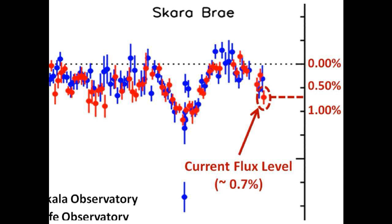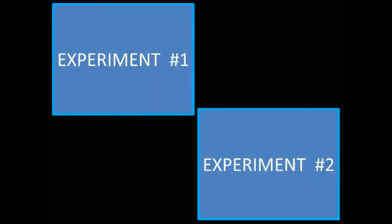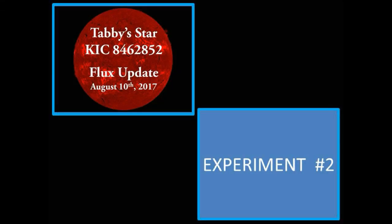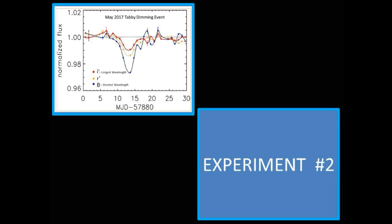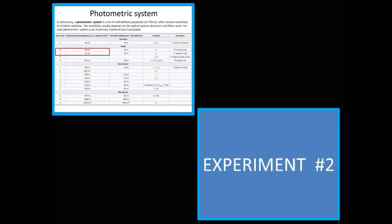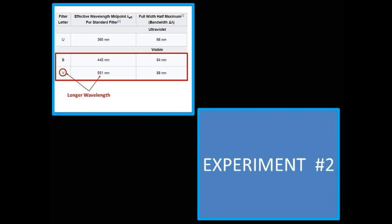We will begin a more regular update now since the short-term dimming events have started once again. Revisiting our first experiment — as you may recall in our video dated August 10, 2017, which you can still see on our channel — we put forth an idea that the material that is accumulating around Tabby's Star which is causing the long-term dimming is a non-transparent material that blocks and/or absorbs all wavelengths of light equally.